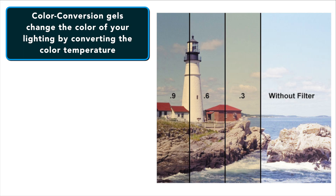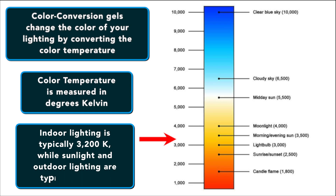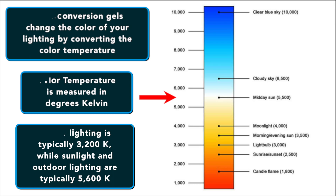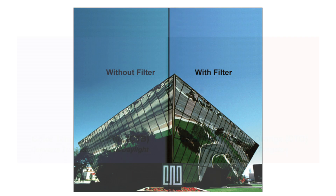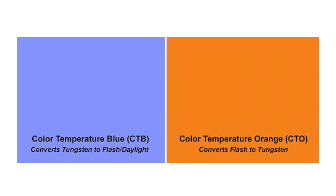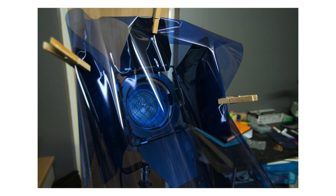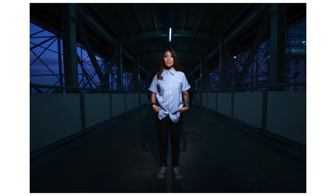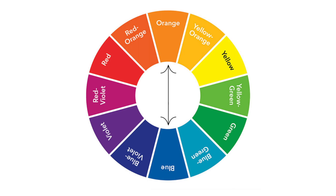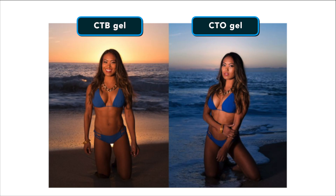There are also color conversion gels, which change the color of your lighting by converting the color temperature. Color temperatures are measured in degrees Kelvin — indoor lighting is typically 3200K while sunlight and outdoor lighting are typically 5600K. Color temperature blue gels are called CTB gels, and color temperature orange gels are known as CTO gels. CTB gels are primarily used to cool down warm incandescent lights so they appear closer to white light around 5000K. CTO gels on lights can cool the background while still maintaining fairly white light on the subject — by adding a warm CTO gel to a light, you can lower your camera's white balance and dramatically cool down the background.